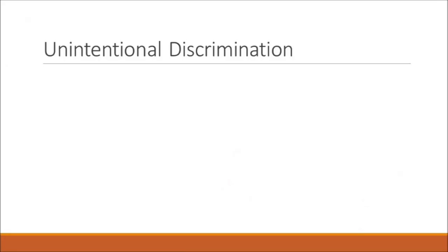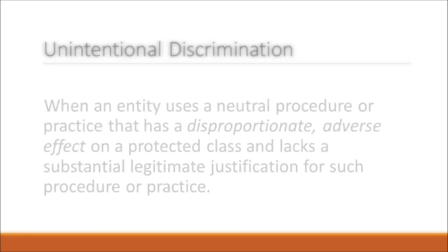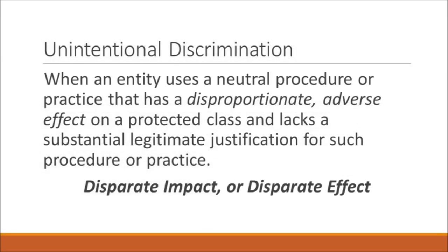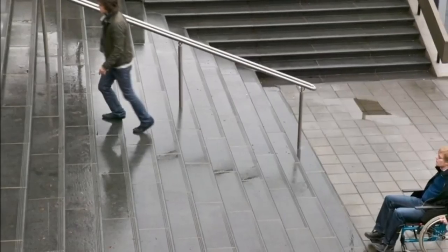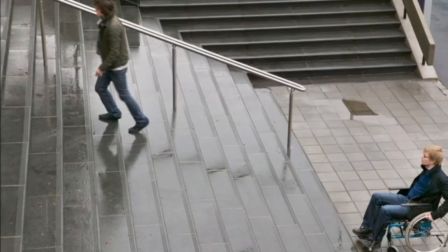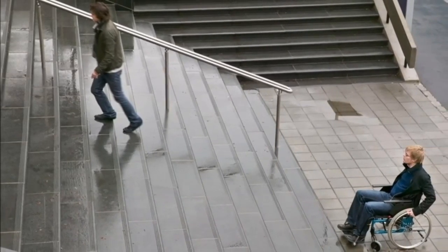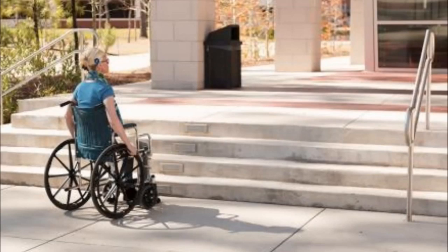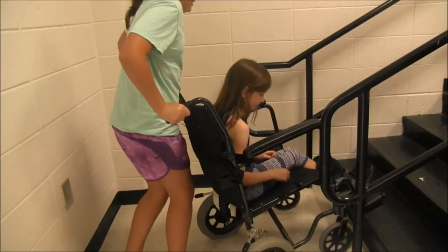Not all discrimination is intentional. Discrimination may also occur when a seemingly neutral policy, practice, or procedure has a disproportionate adverse impact on individuals of a particular protected class, and the practice lacks a substantial legitimate justification. This is referred to as disparate impact or disparate effect. For example, if a school lunch program is administered in an old building without a wheelchair ramp, this limits access for people with disabilities — even if the school did not intend to discriminate.